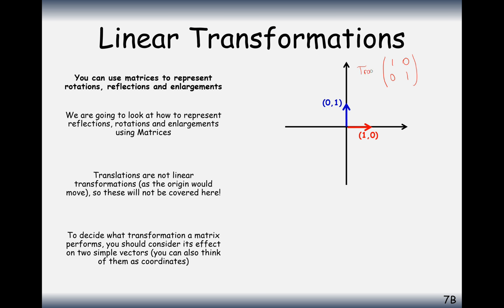Whatever transformation matrix we're given, we times it by the identity. Obviously when you times by the identity, you get back to where you started. So now this transformation matrix is also the coordinates of the image of our transformation. We'll plot these coordinates and then have a look at the picture to see what type of rotation or reflection it was.